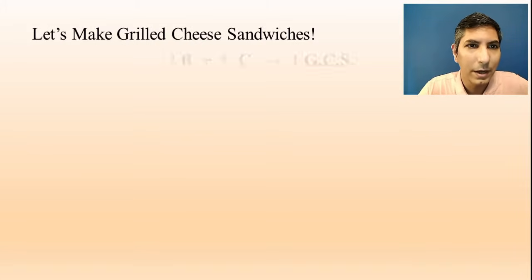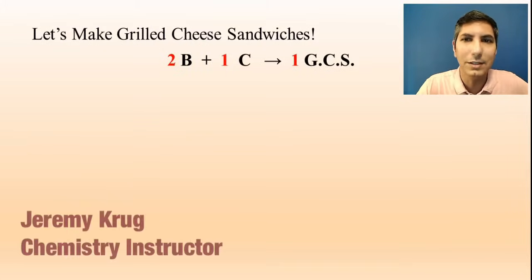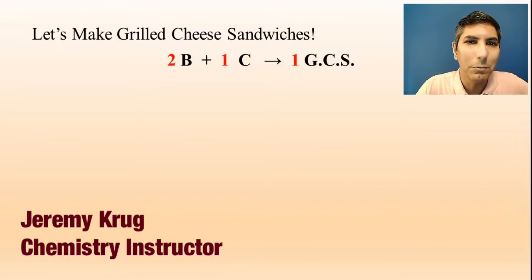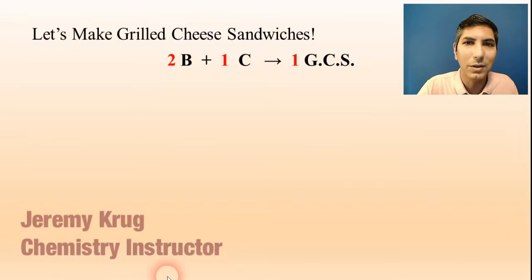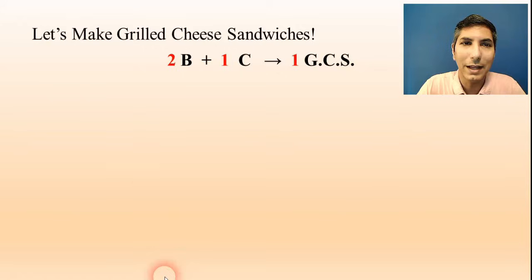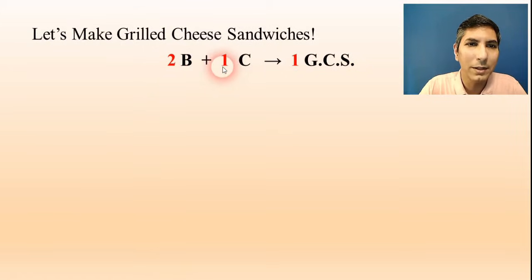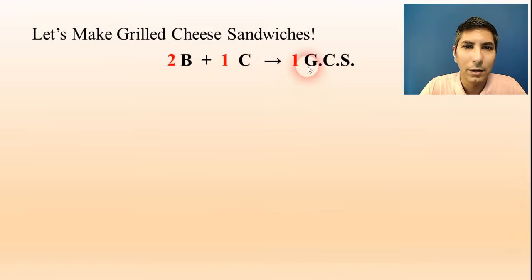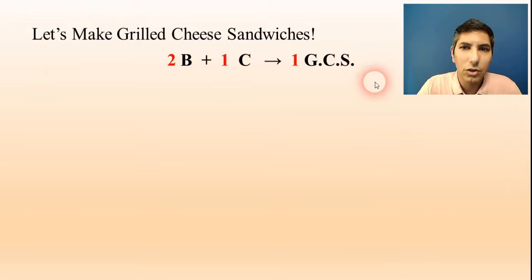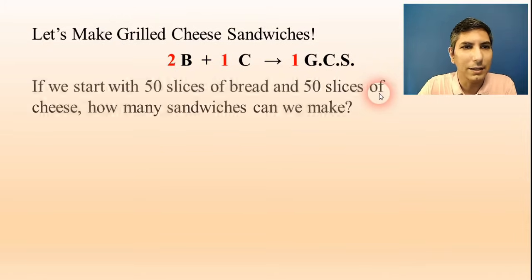Hi there, I'm Jeremy Crouch. Let's imagine that instead of carrying out a chemical reaction, we're making grilled cheese sandwiches. If you're trying to make a grilled cheese sandwich, this is the recipe or equation you would use: two slices of bread and one slice of cheese, and when you put those together you make one grilled cheese sandwich. That's the ratio or equation for carrying out this process.